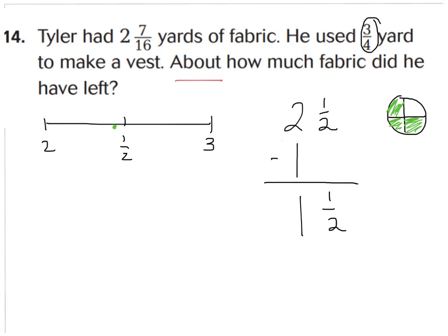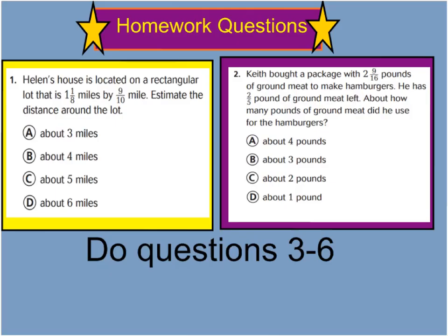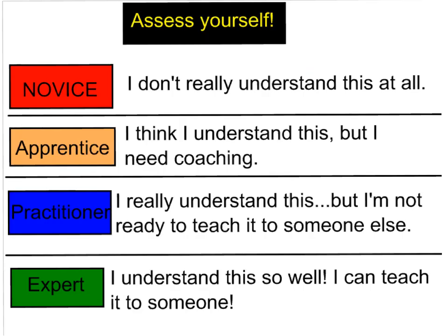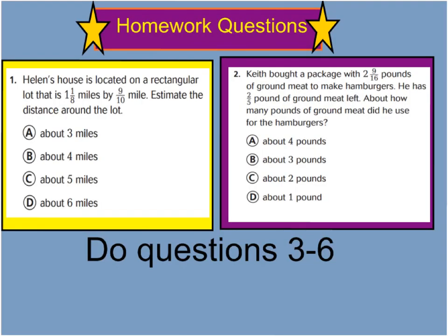Go ahead and turn your page over to the back side and we'll begin our homework problems. You can do numbers one and two all by yourself by estimating and reading your question carefully. Remember, this is estimating — it's not actually solving for the real answer. Look for clue words that say 'estimate' or 'about.' After you answer those two questions, continue on with three through six for review. Please don't forget to assess yourself at the top of your page: write number one if you're a novice, two if you feel like an apprentice, three a practitioner, or four if you feel like an expert. We'll be practicing more of this tomorrow in class. Have a great night!